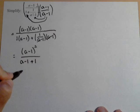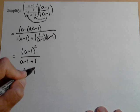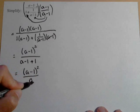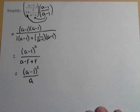So this is equal to a minus 1, the quantity squared, all over a, because we've got a negative 1 and positive 1, so those are going to cancel. And that's how we can simplify.